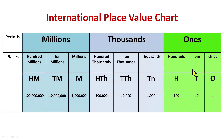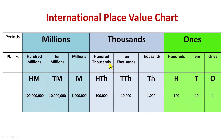In the ones period we have three places: ones, tens, and hundreds. In the thousands period we have three places again: thousands, ten thousands, and hundred thousands. In the millions period we have millions, ten millions, and hundred millions.